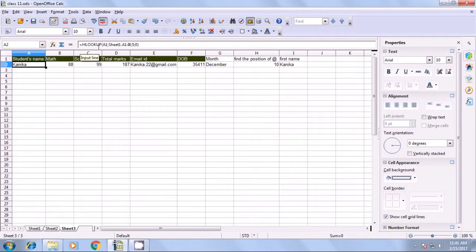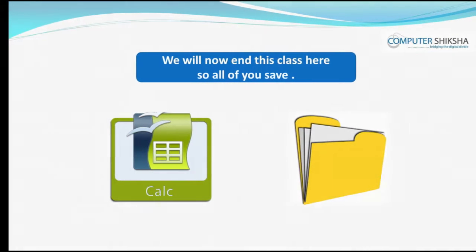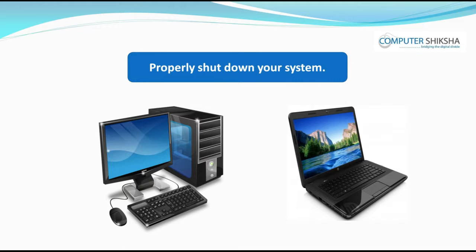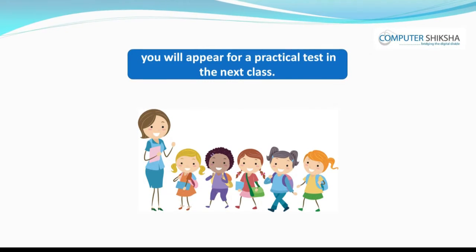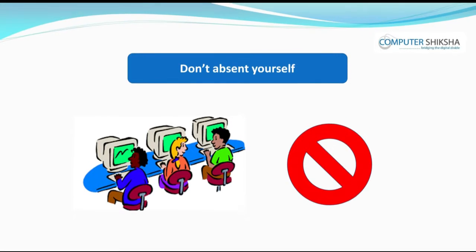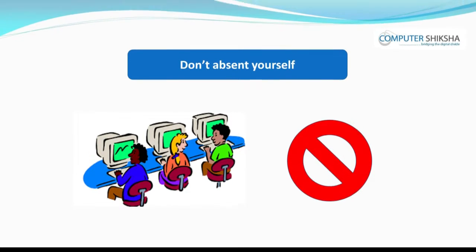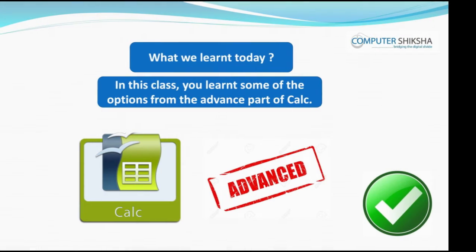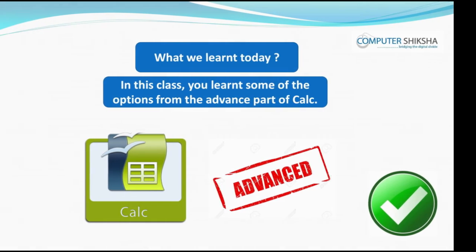The HLOOKUP formula uses: HLOOKUP, open bracket, the search cell and sheet reference, semicolon, the fifth row, 0, close bracket. This is how it is used. We will now end this class here. All of you save and close your file and properly shut down your computers. All of you must remain present in the next class, as you will all appear for a practical test. In this class, all of you revised the use of some of the options from the advanced part of Calc or spreadsheet. Thank you.